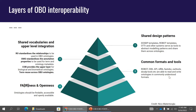There are three that we're generally using within OBO. We've got RO to standardise the relationship types, OMO — the ontology metadata ontology — to have shared properties to describe the actual elements in ontologies themselves, and then COB is the upper layer for actual classes. At the bedrock of that, we've got fairness and openness.